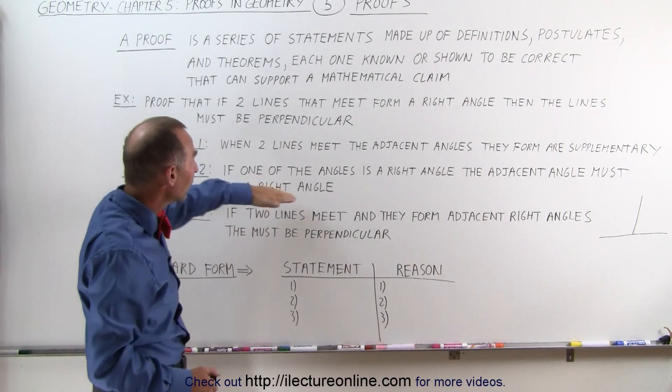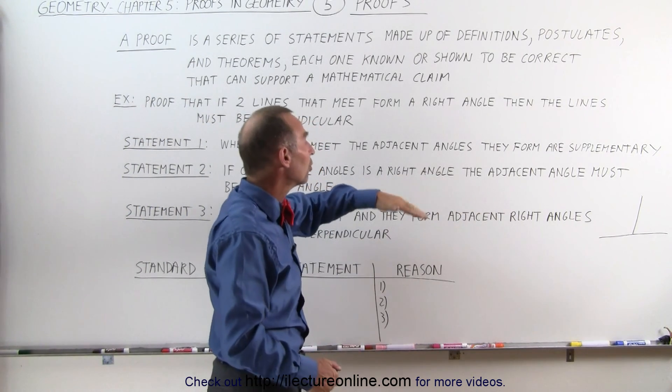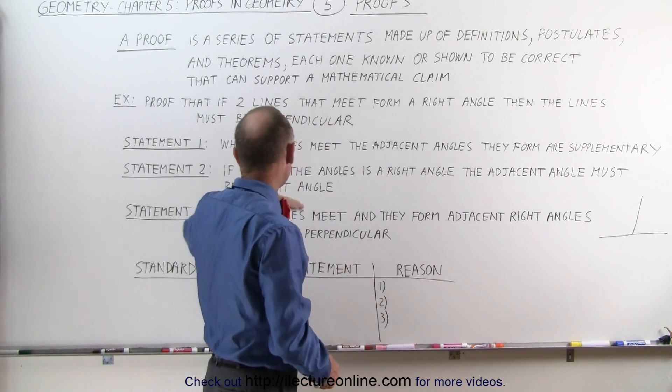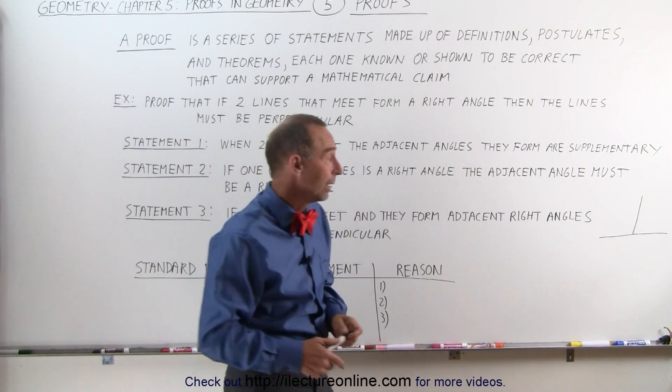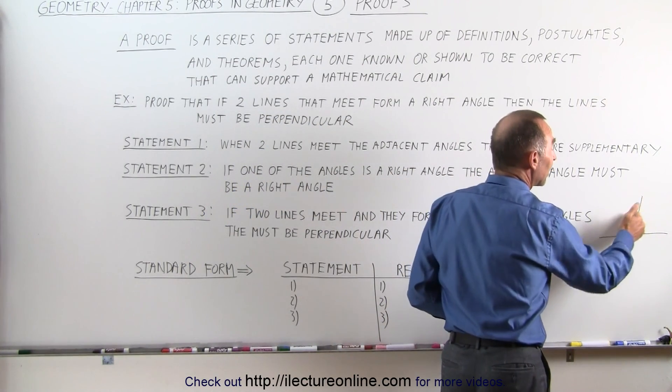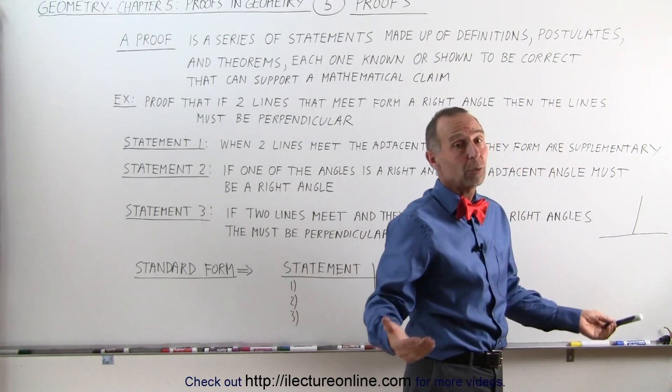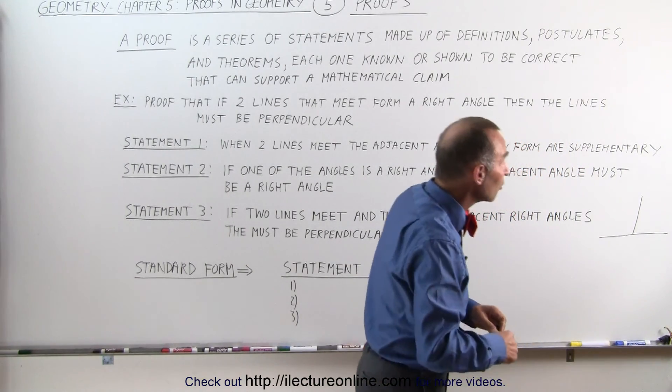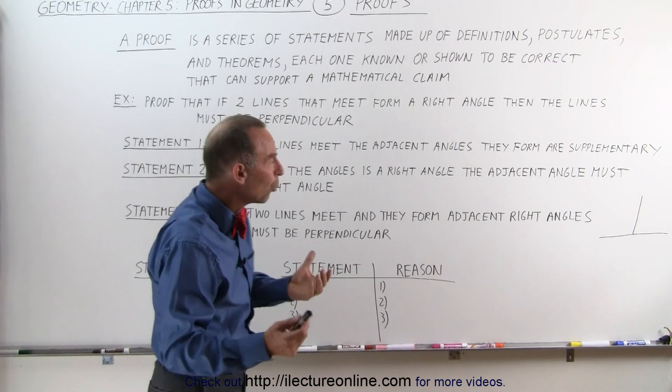Statement two: if one of the angles is a right angle, the adjacent angle must also be a right angle. If one of these is 90 degrees and we know that they add up to 180 degrees, then of course the other one must be 90 degrees as well. That means they're both right angles.